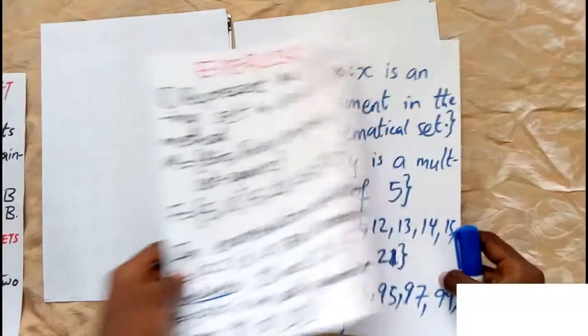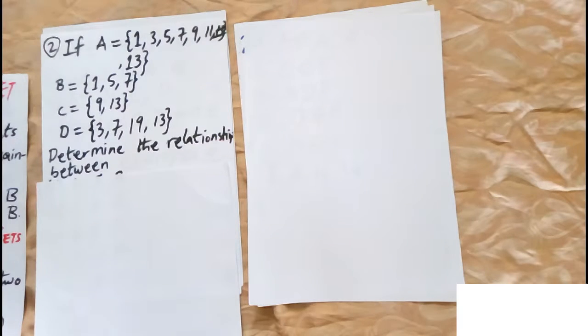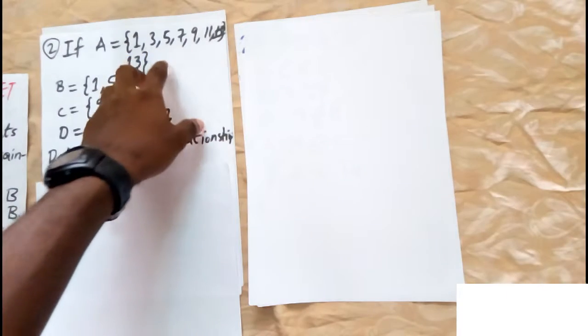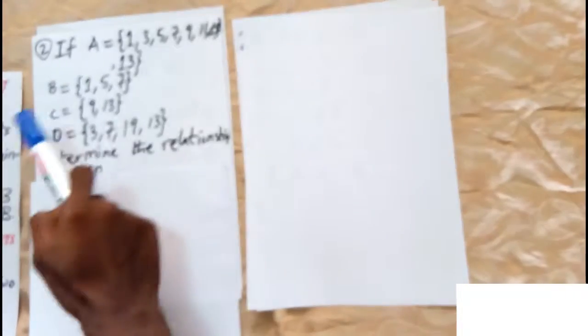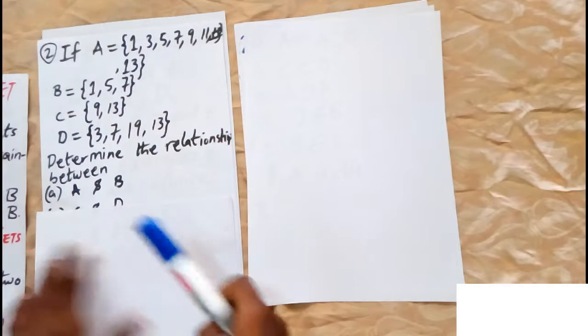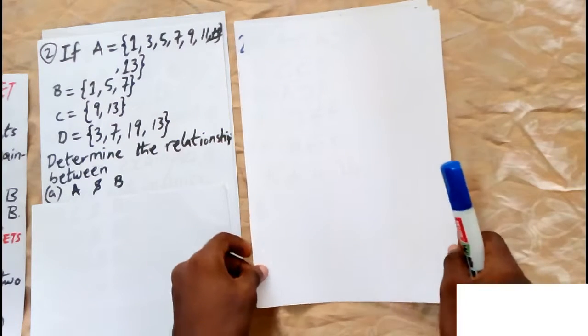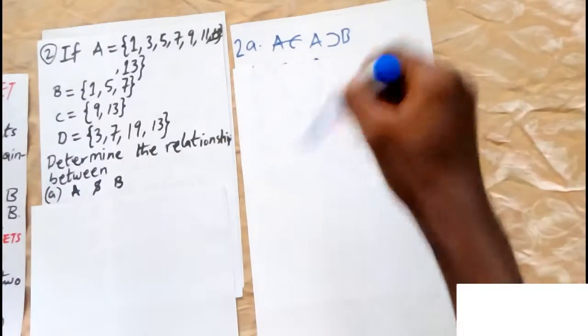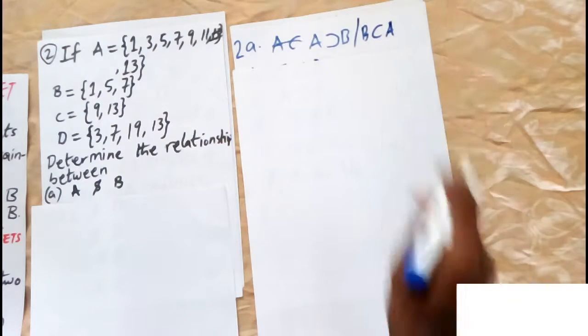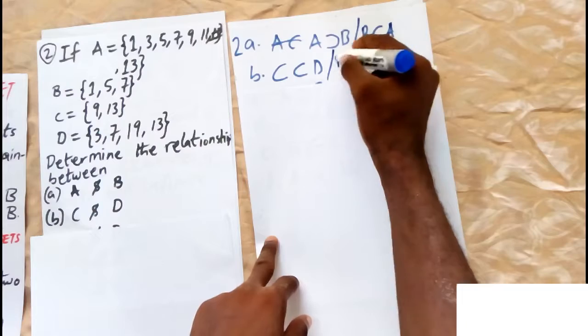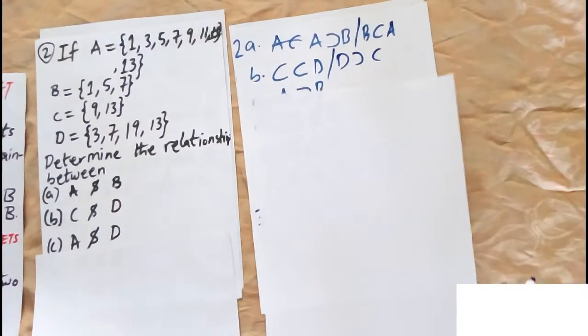The next question was: if A is {1, 3, 5, 7, 9, 11, 13} and B is {1, 5, 7}, C is {9, 13}, and D is another set, determine the relationship between A and B. We can see B contains 1, 5, 7, so A is a superset of B, or equivalently B is a subset of A. For C and D, C is a subset of D or D is a superset of C.